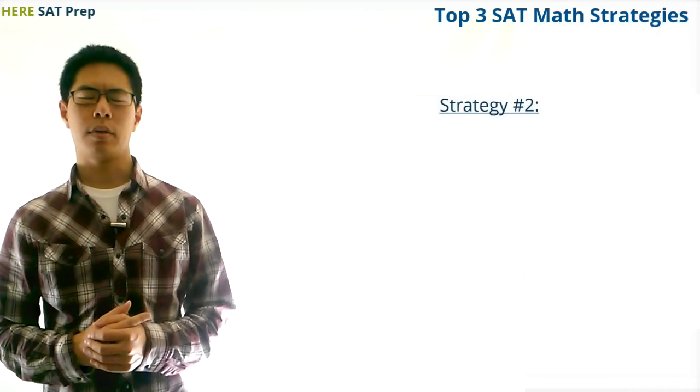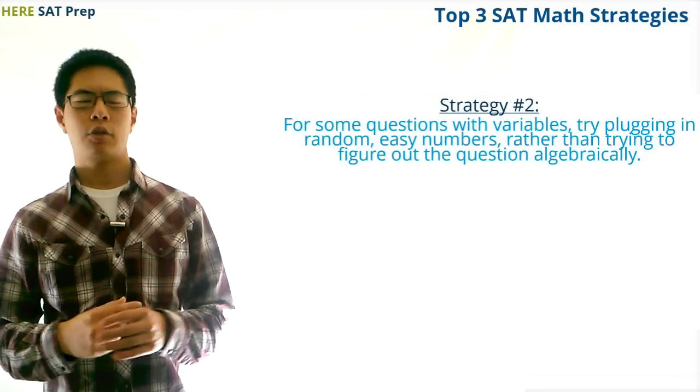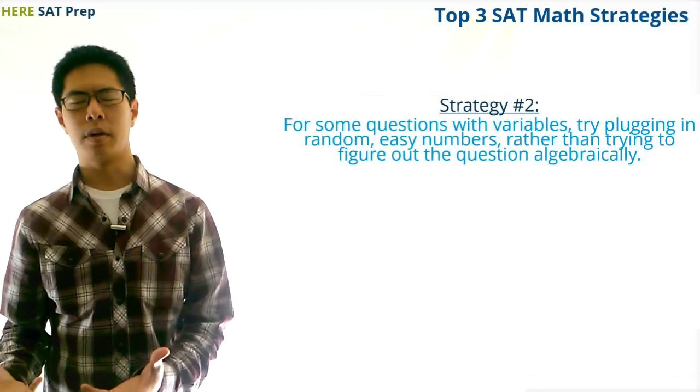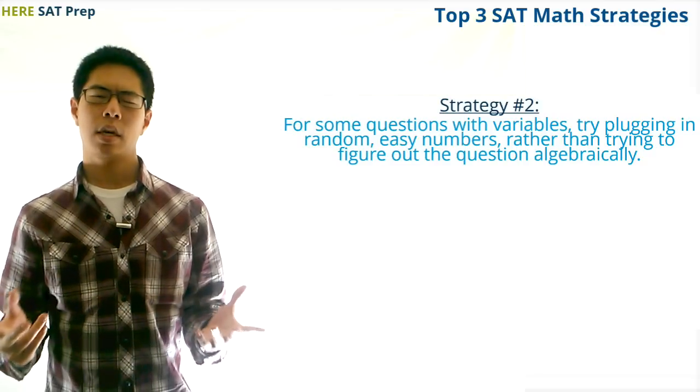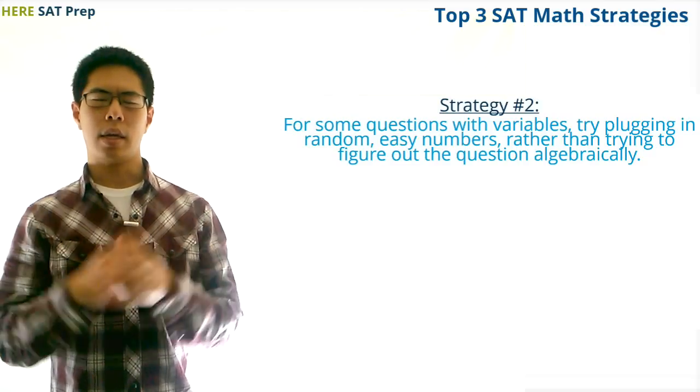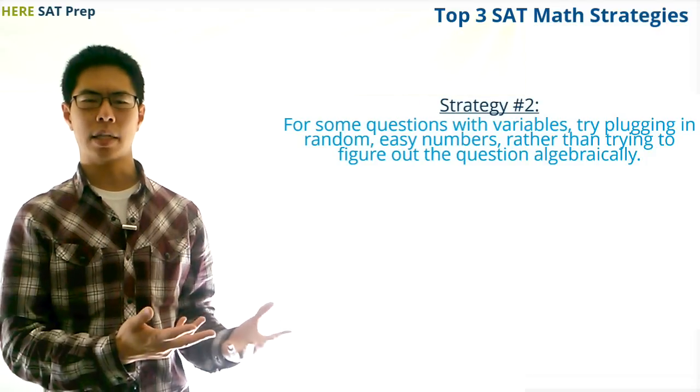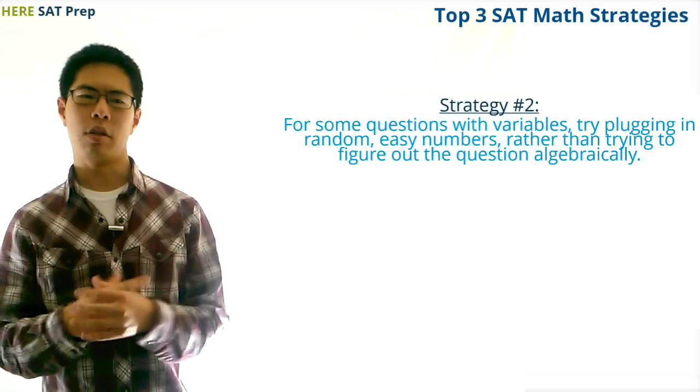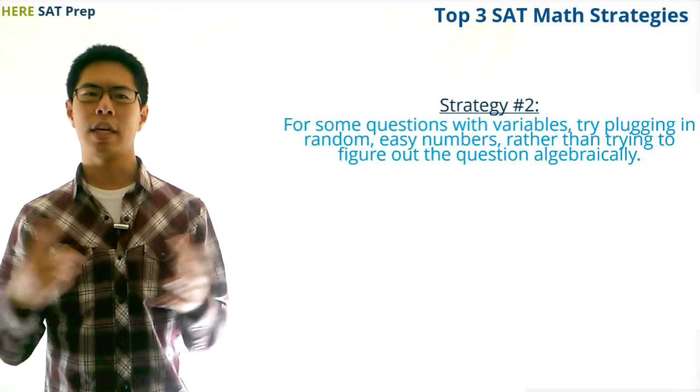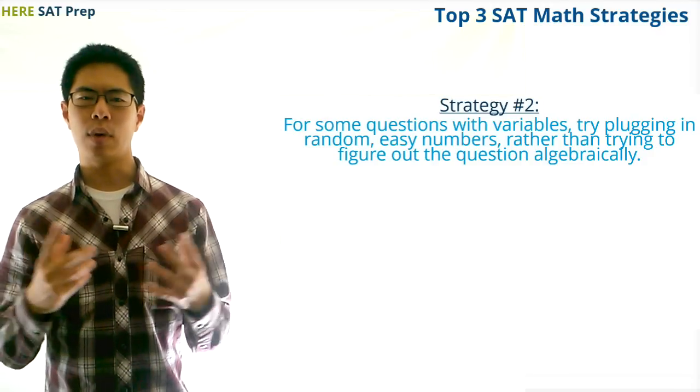Moving on, strategy number two. For some questions with variables, try plugging in random, easy numbers, rather than trying to figure out the question algebraically. For some questions, doing the question the right way, algebraically, will be really complex and end up being a mess, and not be the way the SAT actually wants you to do the question, which is to use critical thinking to find the shortcut and easy way to do the question.